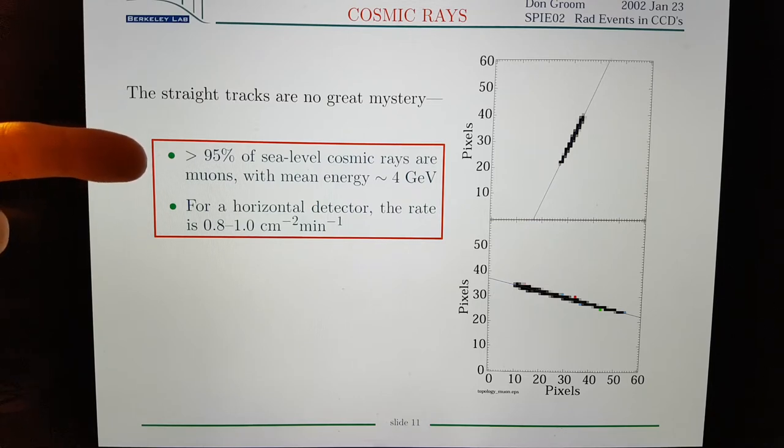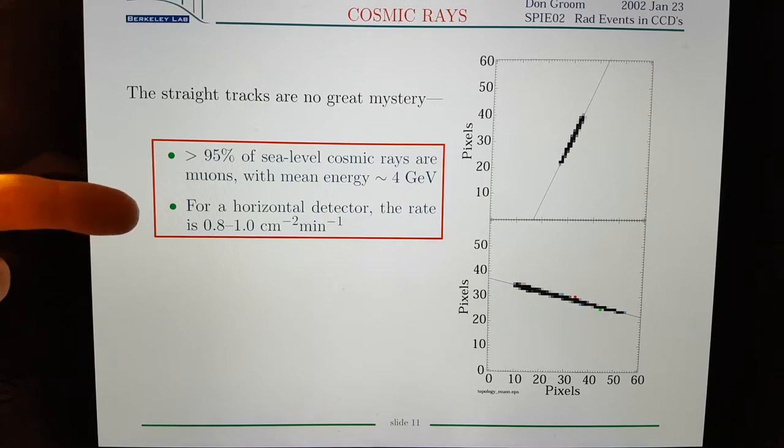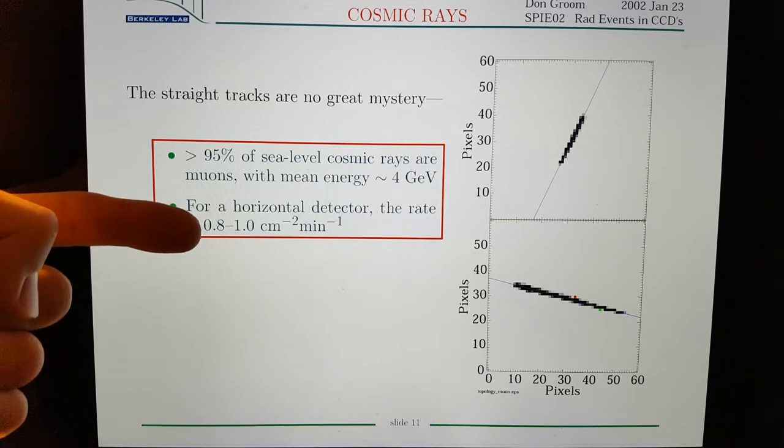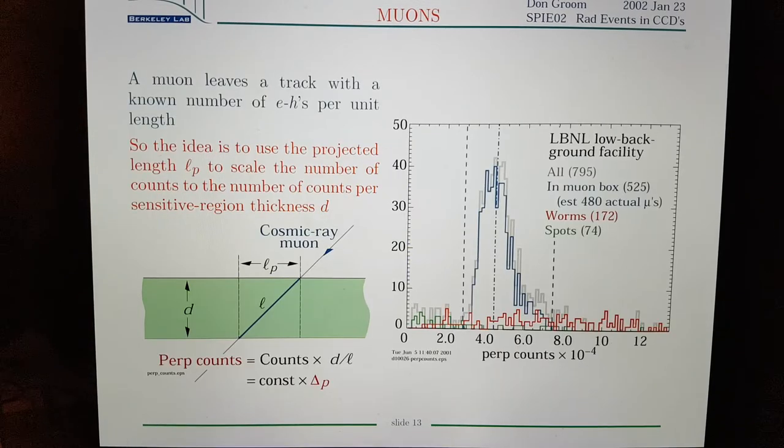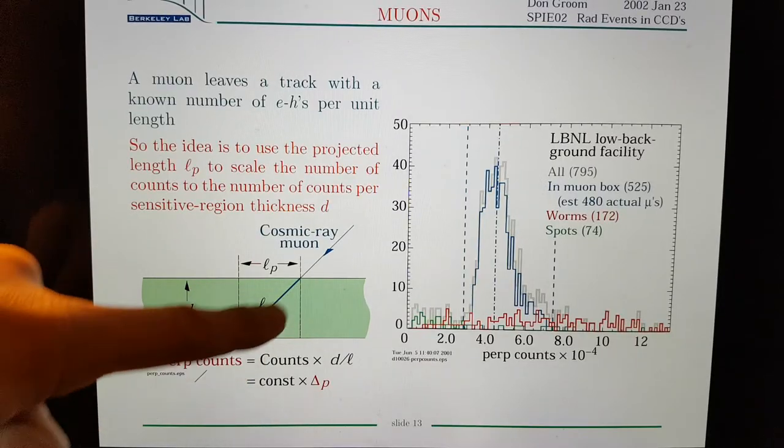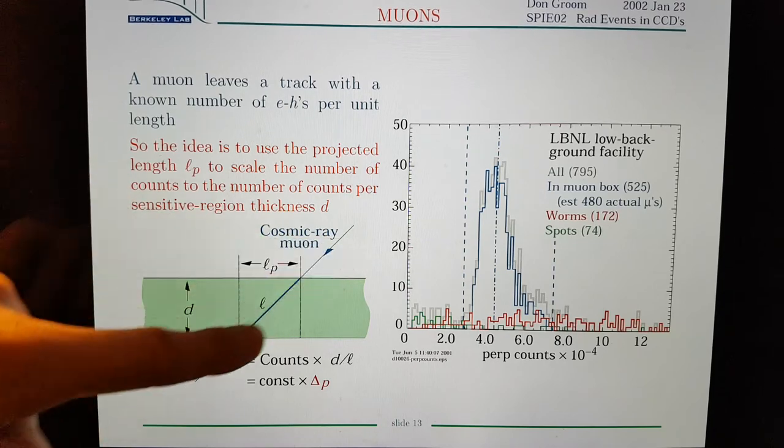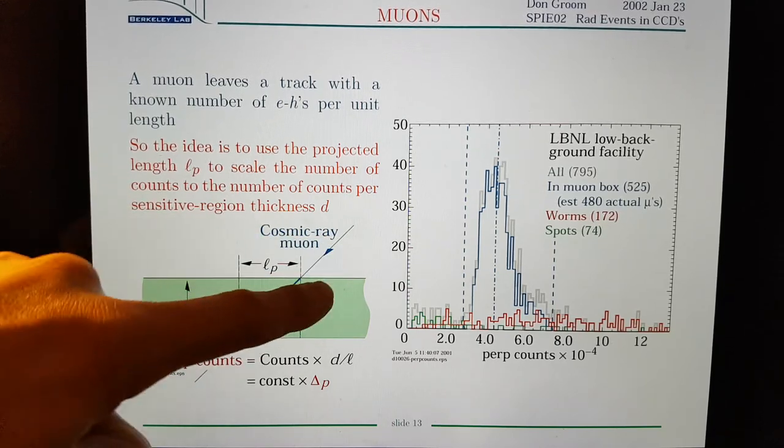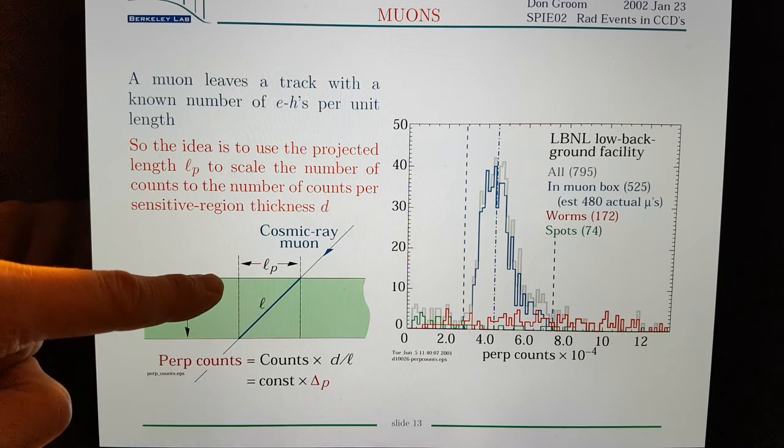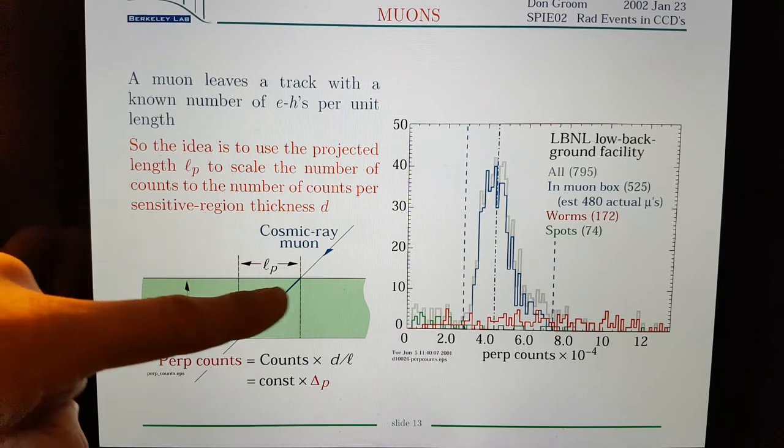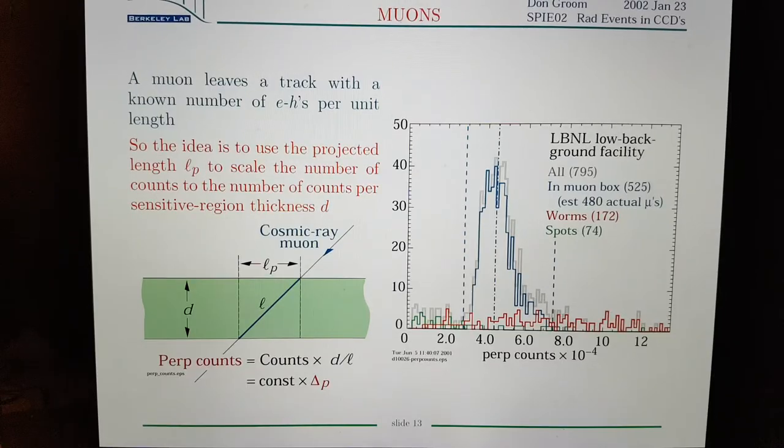95% of sea level cosmic rays are muons with mean energy of 4 giga electron volts. For a horizontal detector, the rate is 0.821 per centimeter per minute. They're using thick detectors that allow as the muon travels through it to create a straight track. Rather than if you have a very thin sensor, CCD or so on, you'll just end up with a spot. And you can't really determine whether that's a muon or not.